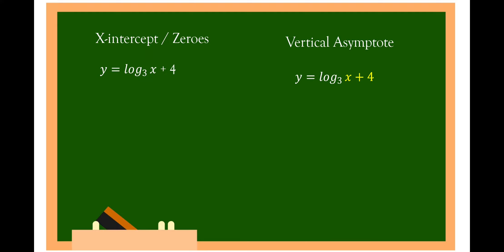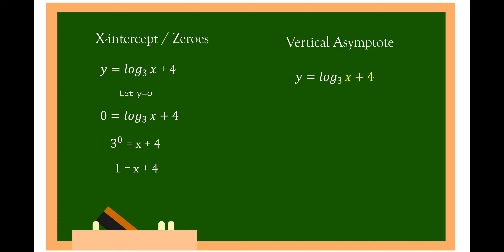For y is equal to log of x plus 4 to the base of 3, to find the x-intercept, let y equal to zero, then change logarithmic form into exponential form: 3 raised to 0 is equal to x plus 4. Since 3 raised to 0 is equal to 1, we have 1 is equal to x plus 4. Solving for x gives x is equal to 1 minus 4, or x is equal to negative 3. So the x-intercept is negative 3. For the vertical asymptote, equate x plus 4 to zero, giving x is equal to negative 4.